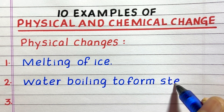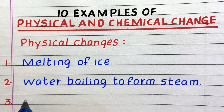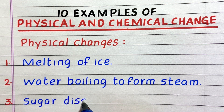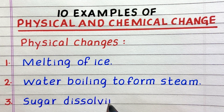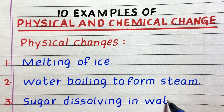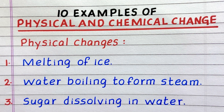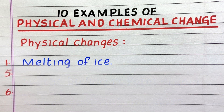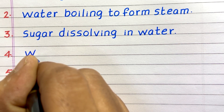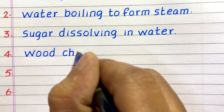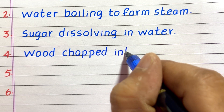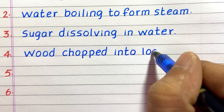Second, water boiling to form steam. Third, sugar dissolving in water. Fourth example of a physical change is wood chopped into blocks.